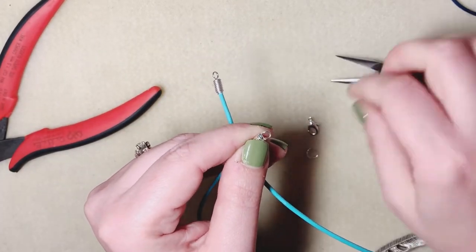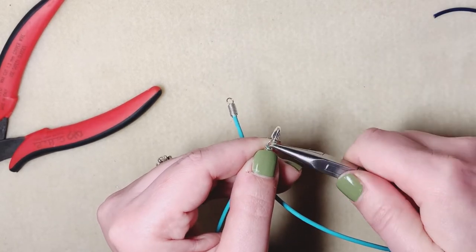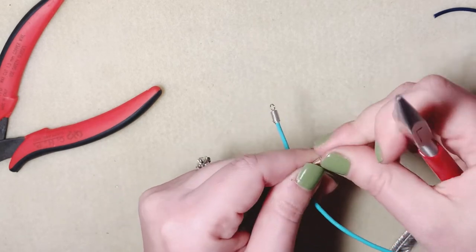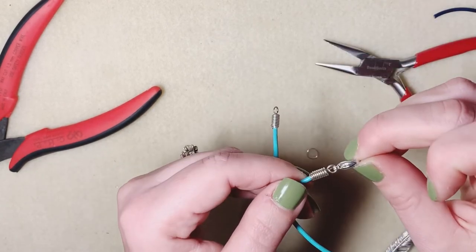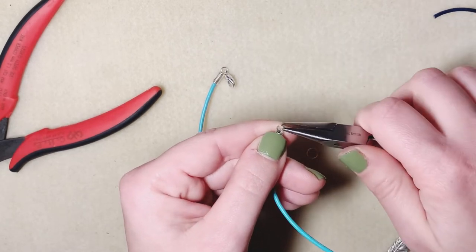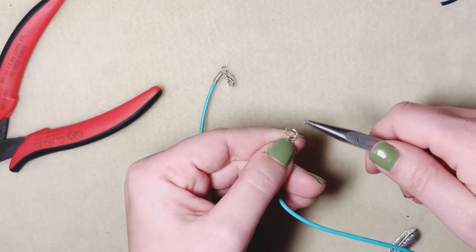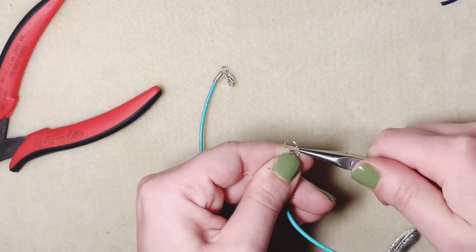So now we're ready to just twist open the ends and slide on our clasp and twist the end shut. Make sure it's flush so there's no chance the clasp will fall off. So you just open this, put this guy on, and close it up flush.